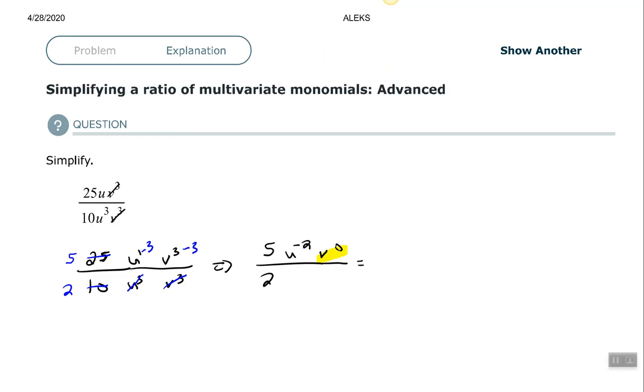All right, so now we have to be concerned with this u to the negative second power. Remember, if you have a base with a negative exponent, you want to move it to the opposite place. So if it's in your numerator, you want to move it to your denominator to make the exponent positive. If the base is in your denominator with a negative exponent, you move it to the numerator to make it positive.